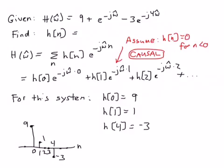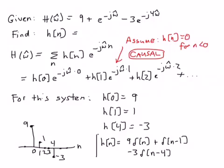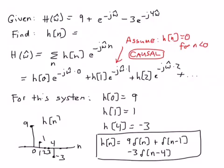So that's what the impulse response looks like for this system. Now we can actually write this out as a series of impulses. So we could say that h of n is equal to 9 delta of n plus delta of n minus 1, that captures the term at 1, and then minus 3 delta of n minus 4. So that would be our final answer to this.